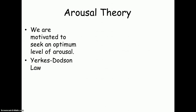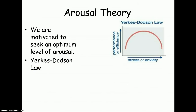Now there's a Yerkes-Dodson law that comes into play here. What this law says is that in general we perform better at moderate levels of arousal. Considering this graph, if you do an easy task, you can perform it quite well with a high level of arousal. But with that same high level of arousal you might not do very well at a very difficult task. So this whole concept is about balance — a moderate level of arousal is the balance at which we perform best.